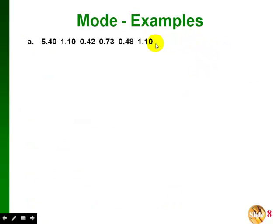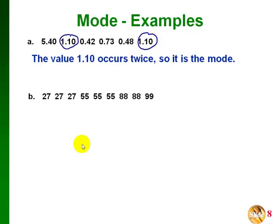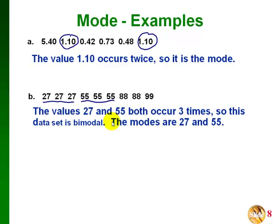Looking at examples for finding the mode — we don't have to sort the list. In the first list, the only repeated value is 1.10, which occurs twice, so that's the mode. In the second list, 27 occurs three times and 55 occurs three times, while 88 only occurs twice and 99 only once. Since 27 and 55 both occur three times, they're both modes — this data set is bimodal, with modes of 27 and 55.